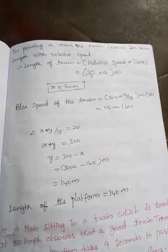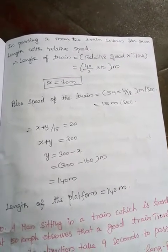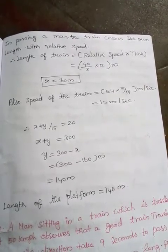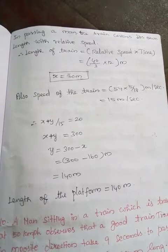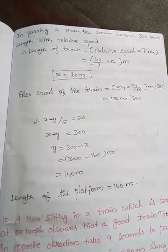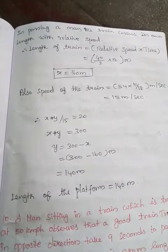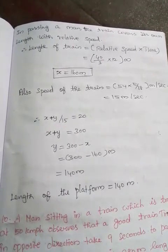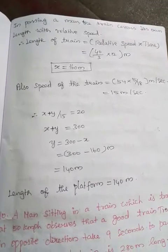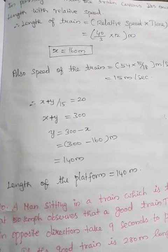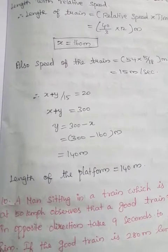Also, speed of the train equals 54 into 5 by 18 meter per second, equal to 15 meter per second. Therefore, x plus y divided by 15 equals 20. So x plus y equals 15 into 20, equals 300. So y equals 300 minus x. Since x equals 160, y equals 300 minus 160, equals 140 meters. Length of the platform equals 140 meters.